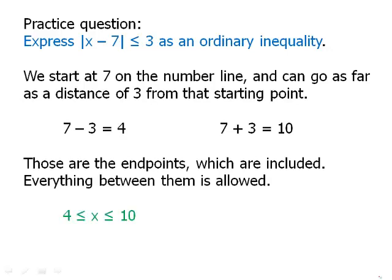Those are the endpoints and so everything between them is allowed. And so this would just be 4 is less than or equal to x is less than or equal to 10. So that re-expresses that absolute value inequality as an ordinary inequality.